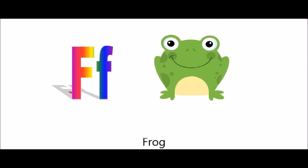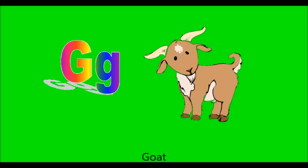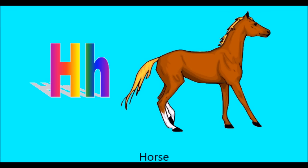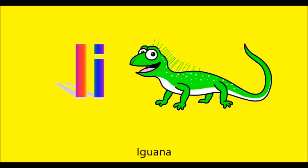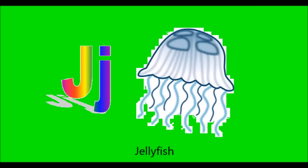F. F is for frog. G. G is for goat. H. H is for horse. I. I is for iguana. J. J is for jellyfish.